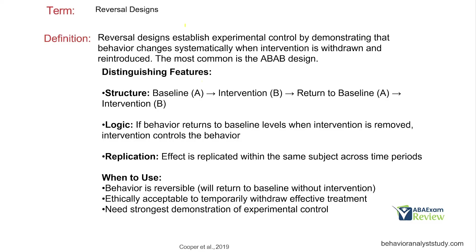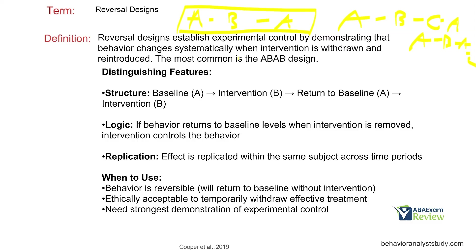The reversal design is probably the most common outside of the multiple baseline. It's your simple ABA design. You can have multiple treatments — A, B, A, C, or A, B, A, C, and so forth. We establish experimental control by demonstrating that behavior changes when intervention is added or taken away. It's the strongest type of experimental control because we're actually removing the intervention altogether. The basic structure is: baseline, intervention, back to baseline.